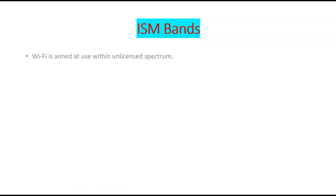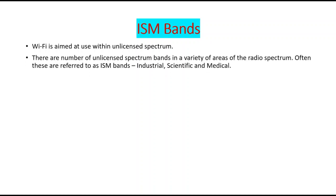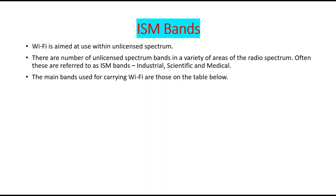Wi-Fi is basically aimed at use with an unlicensed spectrum. There are a number of unlicensed spectrum bands which work on a variety of areas of the radio spectrum. These are often referred to as ISM bands — ISM stands for Industrial, Scientific, and Medical. Mainly these bands are used for carrying Wi-Fi.